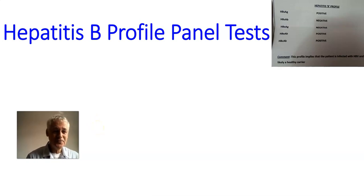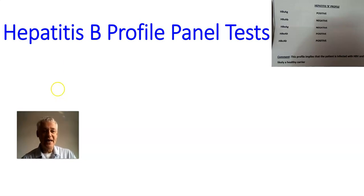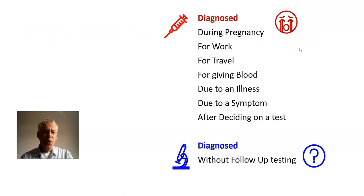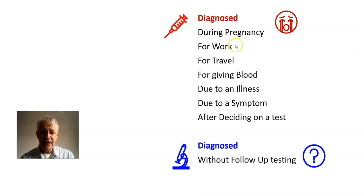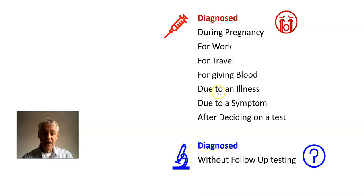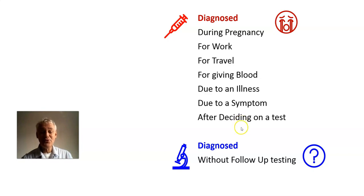Today we're going to talk about the Hepatitis B Profile Panel Tests. A lot of people are diagnosed with Hepatitis B during pregnancy, tested for work, for travel, for giving blood. They're tested because they're in hospital with some sort of illness. Sometimes they're tested because of a symptom — they might have gone yellow. Or just because they decided they wanted to get checked for Hepatitis B, to see whether or not they have that problem.